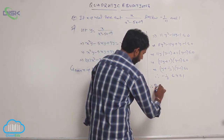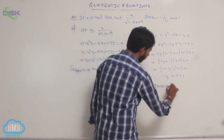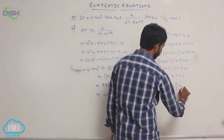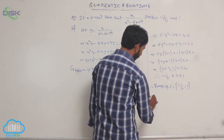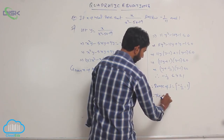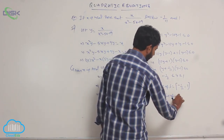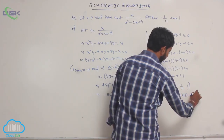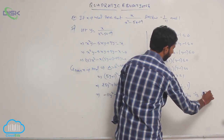Therefore the range of f(x) is the closed interval [-1/11, 1]. Hence the value of y lies between -1/11 and 1.